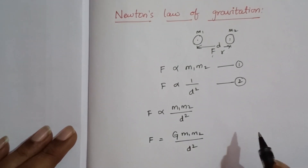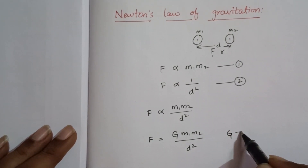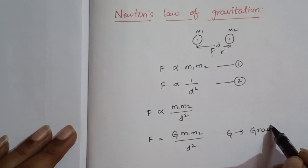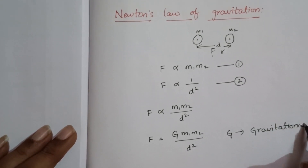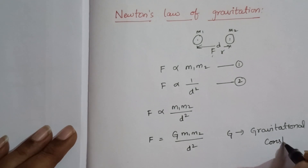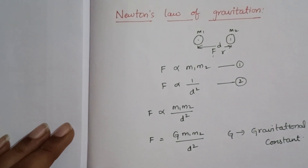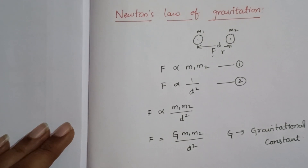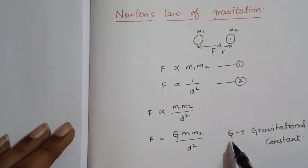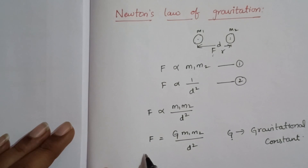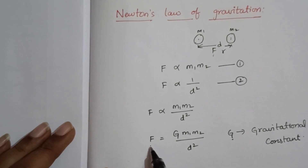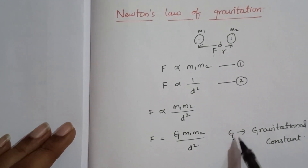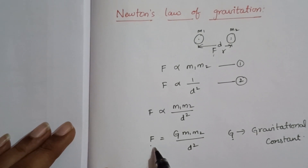Capital G is the gravitational constant. Many students get confused and think G stands for gravitation, but no — G is the gravitational constant. It is not a force. F is the gravitational force; G is just a constant. Remember: capital G means gravitational constant.